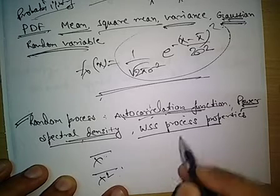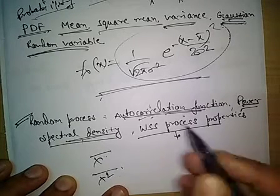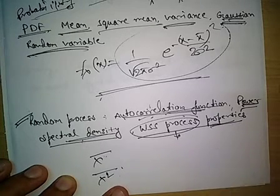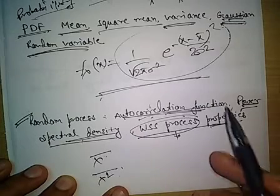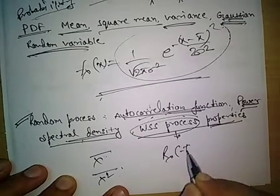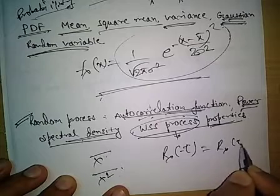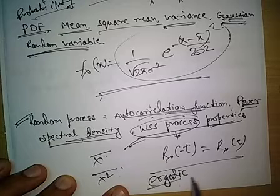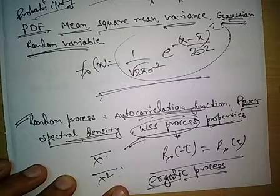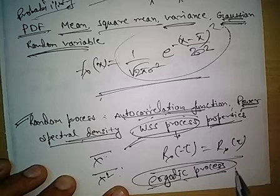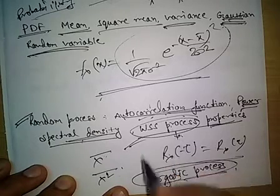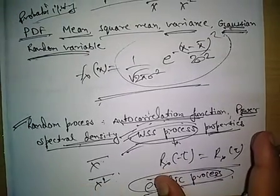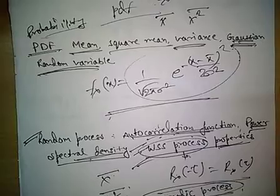WSS (Wide-Sense Stationary) process is a very important topic. Most of the processes asked in the exam are related to WSS only. Its properties are important — for example, the autocorrelation function of a WSS process is an even function. Ergodic process is also a topic that may appear in the exam, but it is not as important as WSS. We must learn WSS process and its properties for the coming GATE exam.